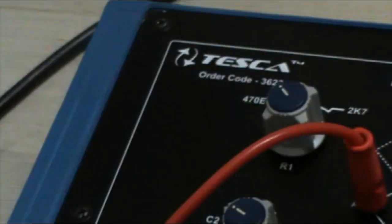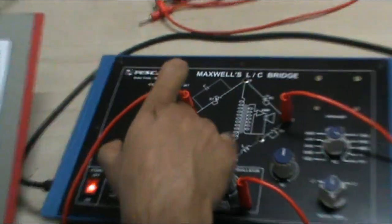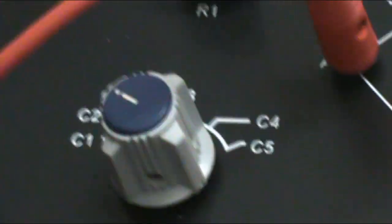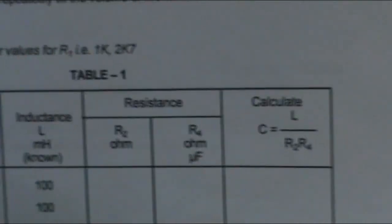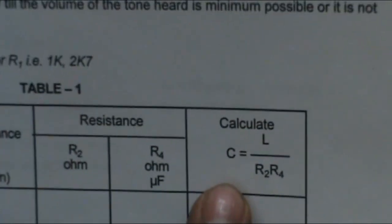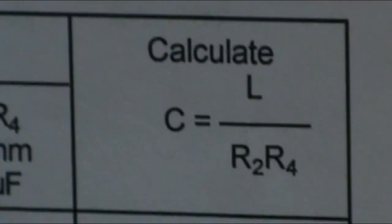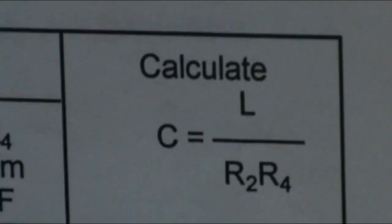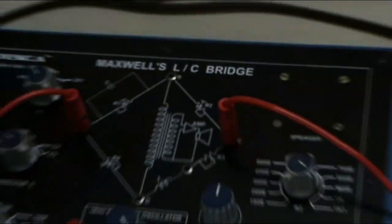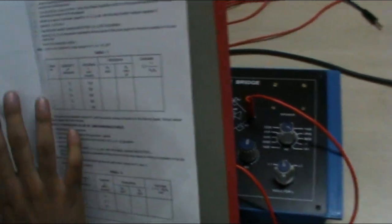We have other different capacitors C1, C2, C3, C4 and C5. By varying the resistance we can calculate different values of R2 and R4. Through this formula C equals L divided by R2 times R4, we can calculate the capacitance that is desired. That's all in experiment 1.